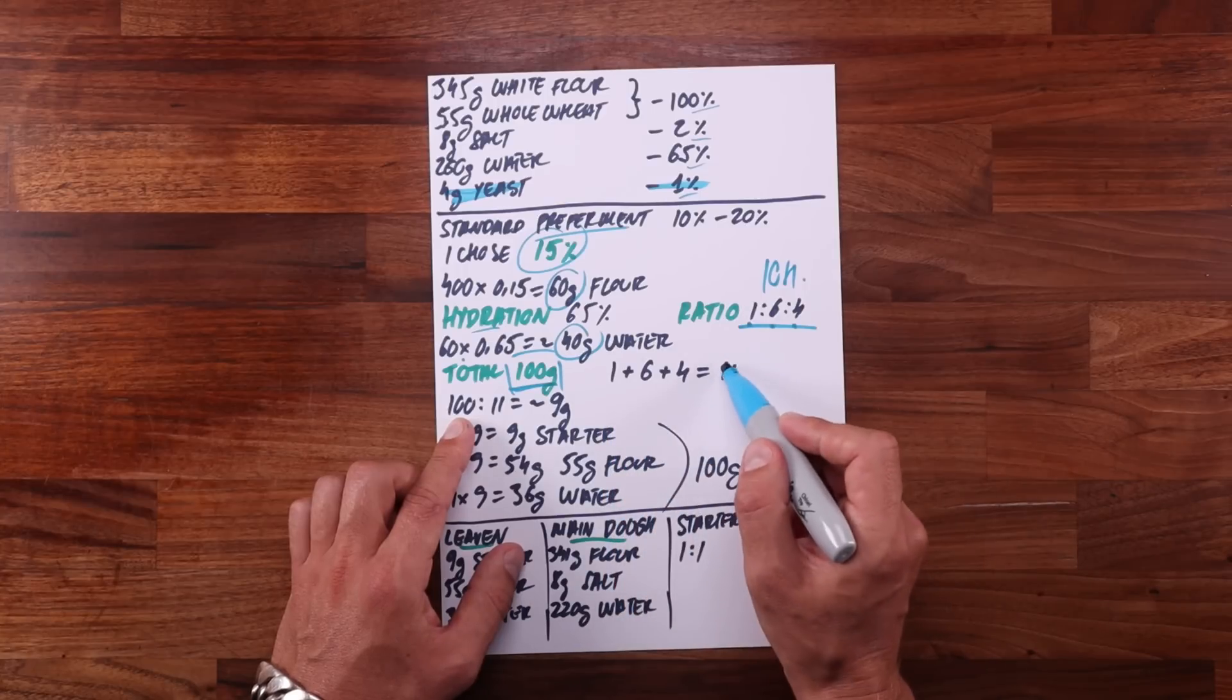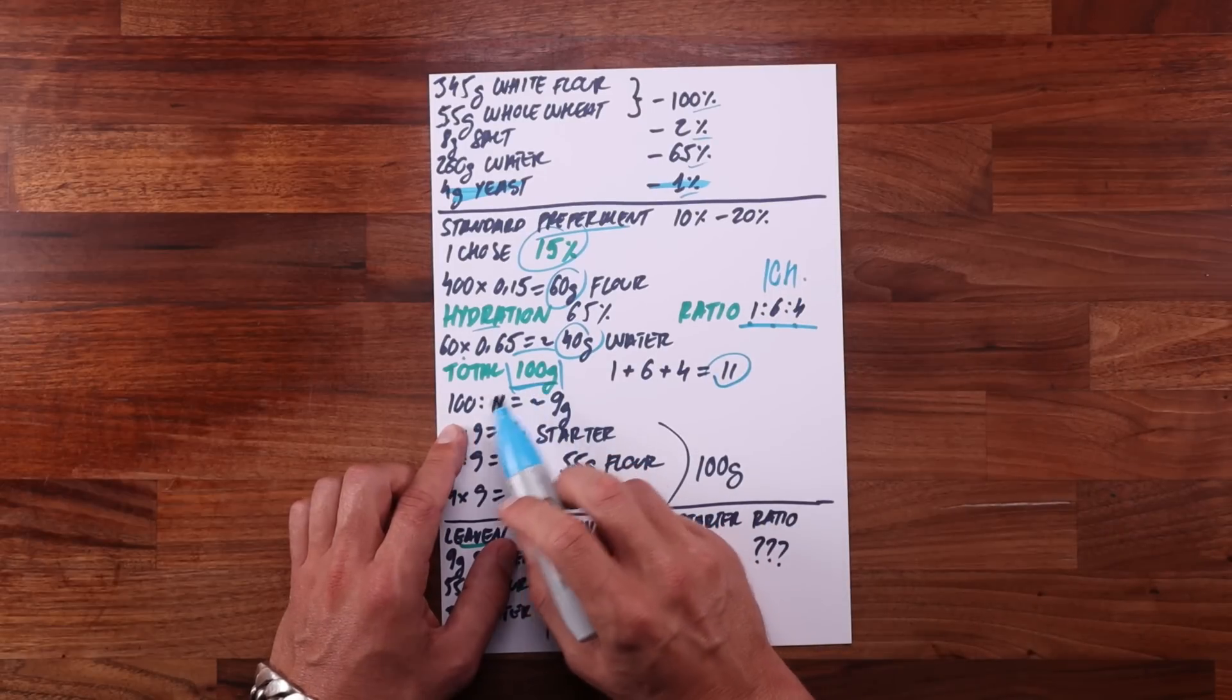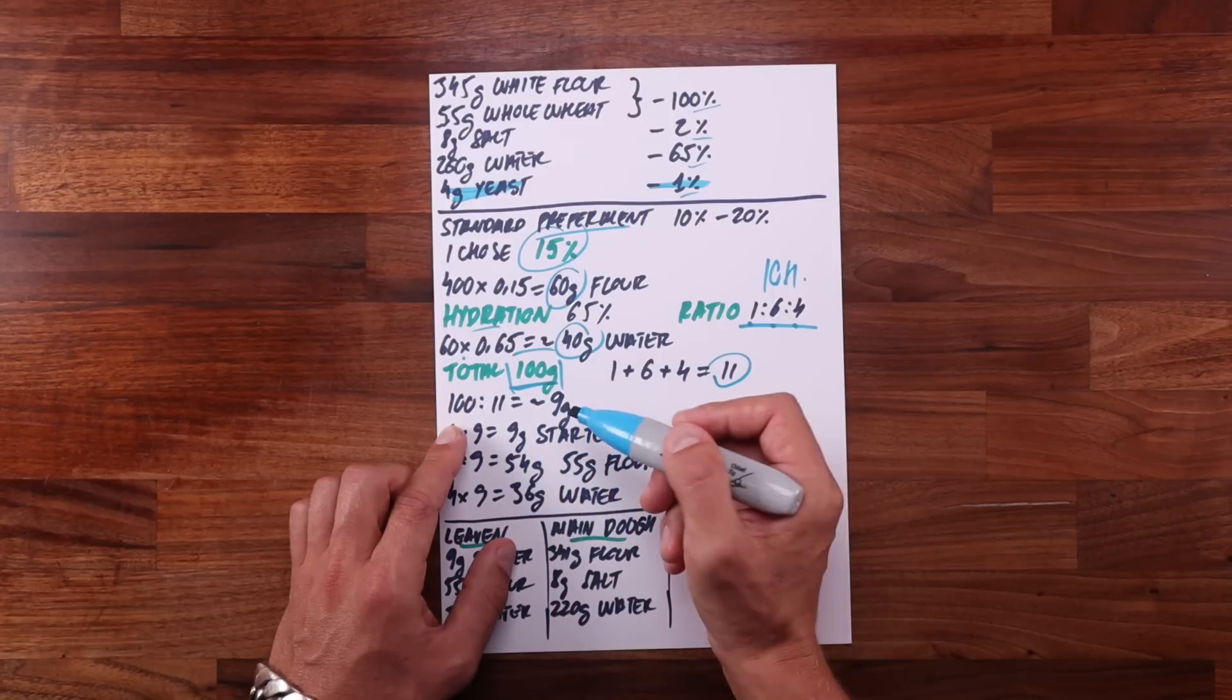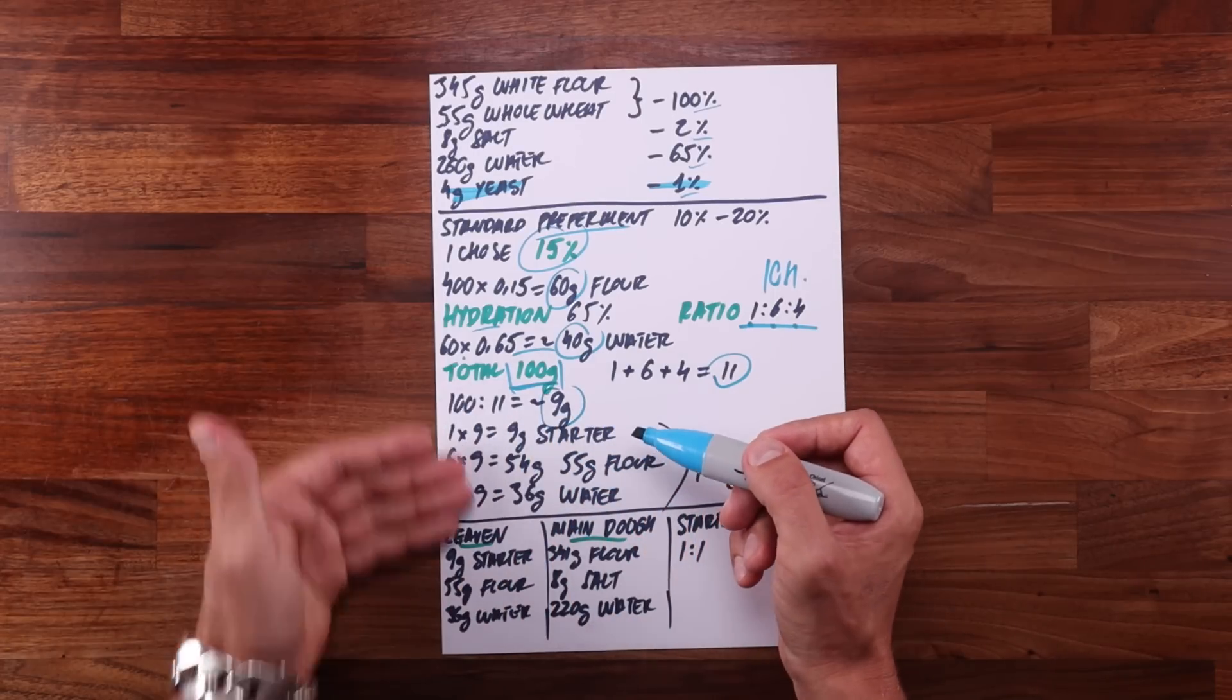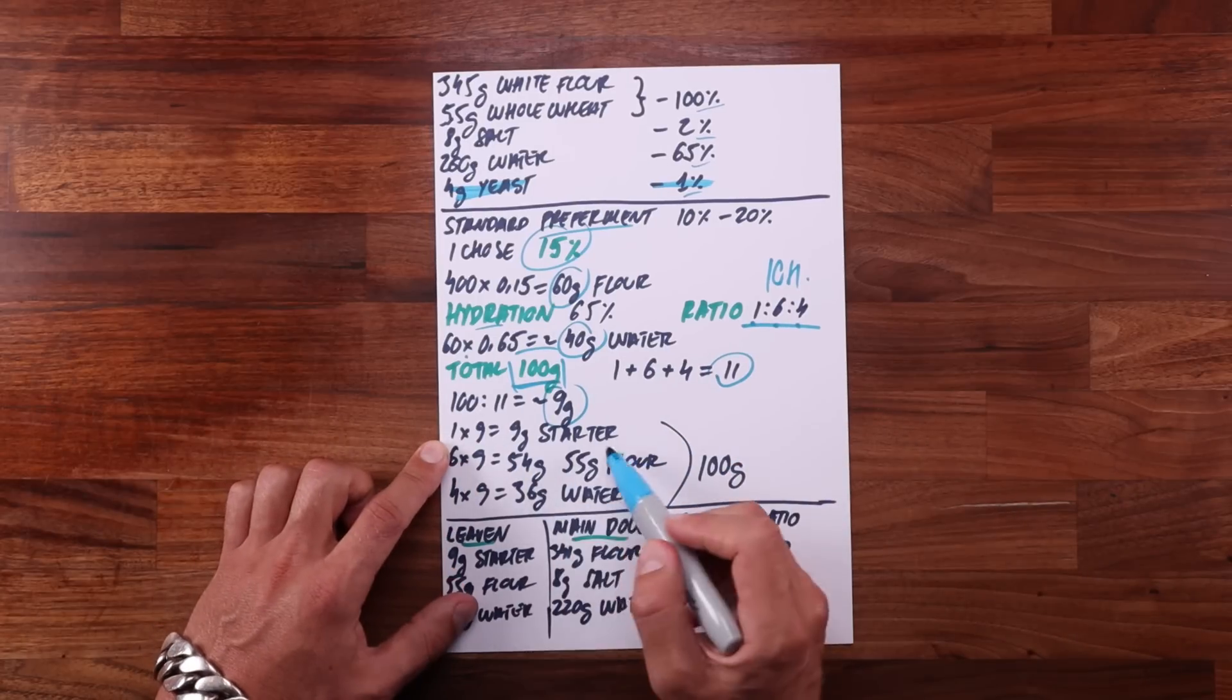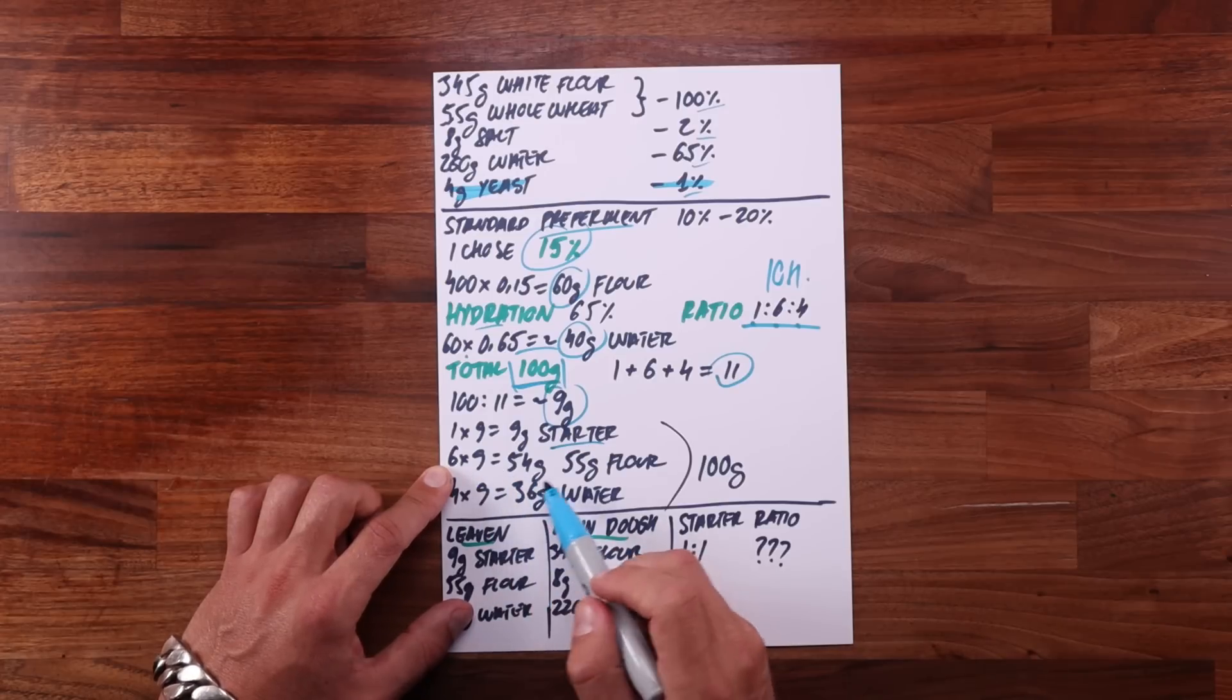So to work out the exact amount of each ingredient, first we add up the ratio values. So 1 plus 6 plus 4 equals 11. You could say that's how many parts there are in this leaven. So next we take the total amount of leaven and divide it by that number. 100 divided by 11 is about 9. This means that one part of this leaven weighs 9 grams. To work out each ingredient we simply multiply each of the ratio values by that number.